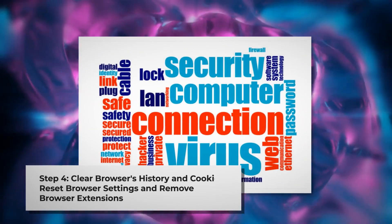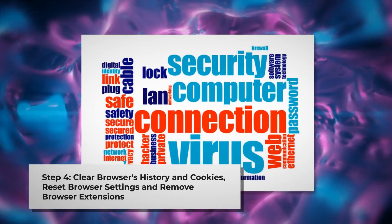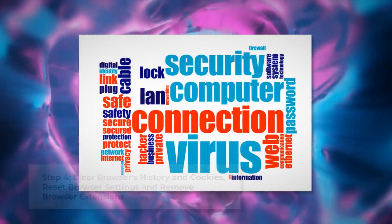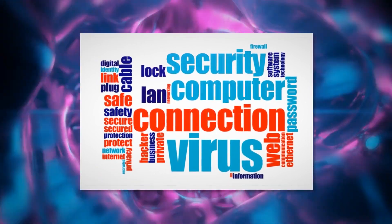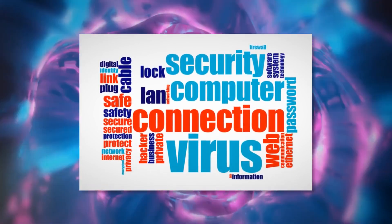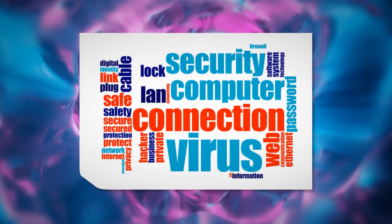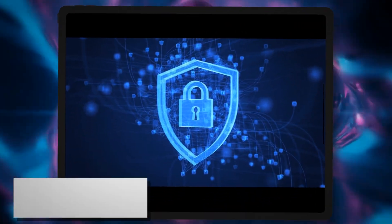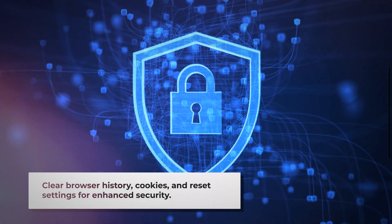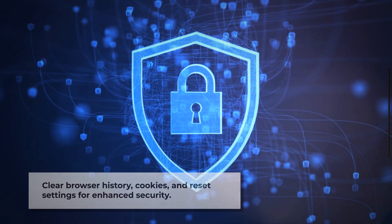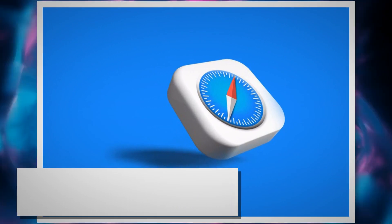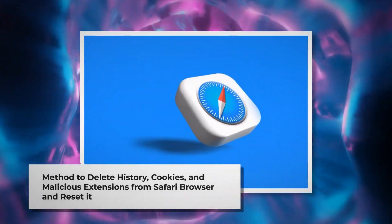Step 4: Clear browser history and cookies, reset browser settings, and remove or disable unknown browser extensions to be safe from AdWare. Once you delete the harmful files as mentioned in Step 3, you should delete malicious or unknown extensions from your browsers like Safari, Chrome, Firefox, Opera, and so on, whichever you are or were using. You should also delete browser history and cookies, and reset your browser. Note: before you reset your browser settings, it is always a good idea to back up your bookmarks. Method to delete history, cookies, and malicious extensions from Safari and reset it.